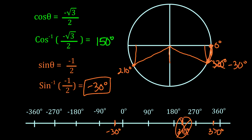For sine, all principal values lie between -90 and +90 degrees. For cosine, the x-values cover both positive and negative, so all principal values fall between 0 and 180 degrees.